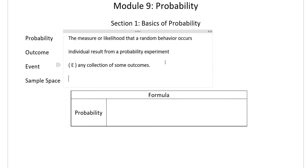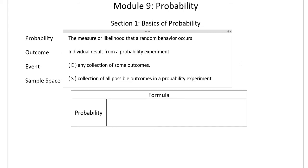Now that we know what an event is, we also want to talk about a sample space, which we represent with a capital S. The sample space is the collection of all possible outcomes in a probability experiment. For something like a six-sided die, the sample space is simply the list of numbers one through six. The reason we talk about the sample space is because sometimes it isn't that easy, and it's very important to figure out how big the sample space is in order to determine probability.